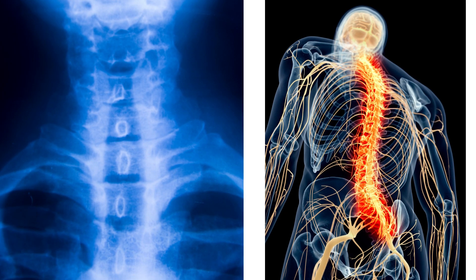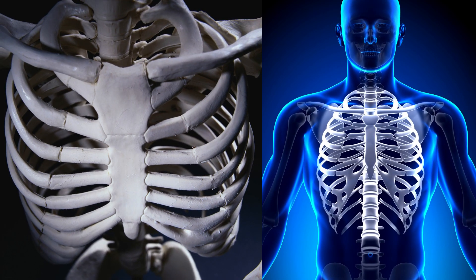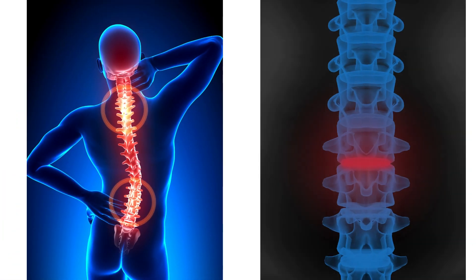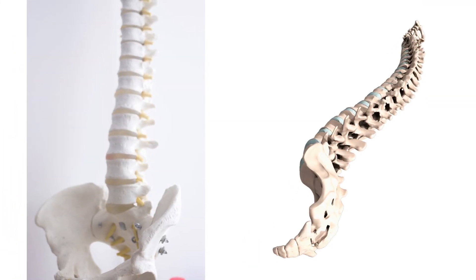The spinal column or vertebrae — the neck and backbone — are irregular bones that protect the spinal cord, while the ribcage protects the lungs and the heart. Vertebrae are arranged on top of one another and move over each other slightly. There are 33 vertebrae in the spinal column of a child and 26 in an adult, because as the child grows, the last seven bones join together to form just two bones.